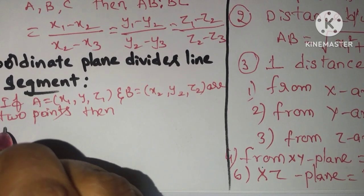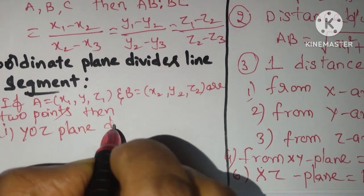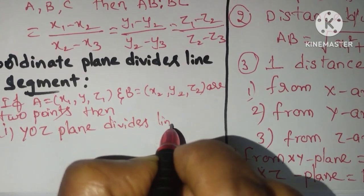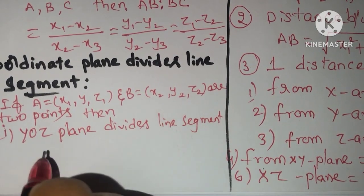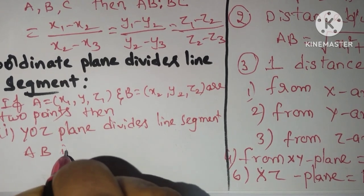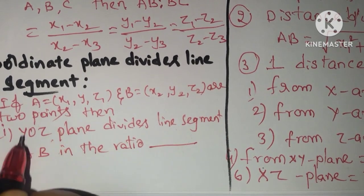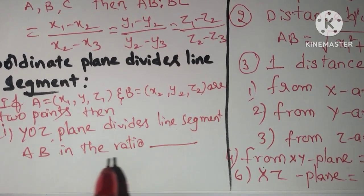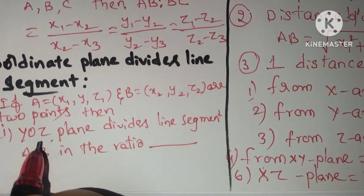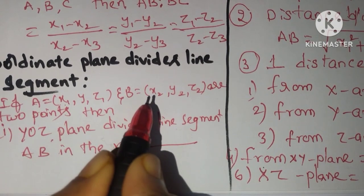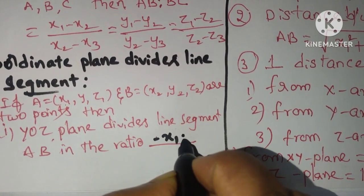At this time the conditions: first condition, suppose YOZ plane divides line segment. This plane divides the line segment AB in the ratio. Here YOZ is a plane. This plane divides the line segment AB in the ratio. What is the missing axis here? X axis. So here what is the X we have? X1, X2. So the answer is minus X1 is to X2.